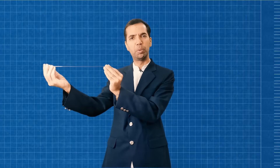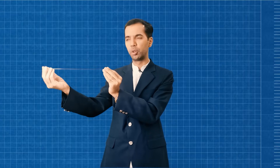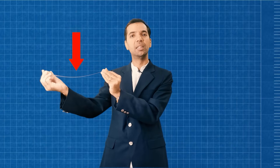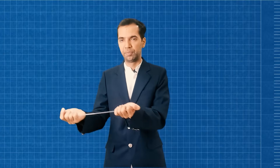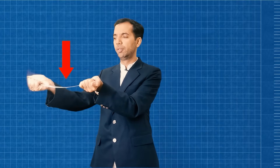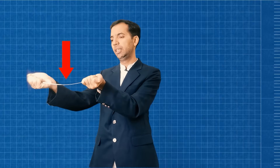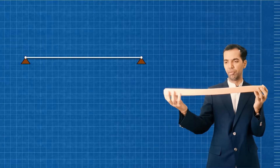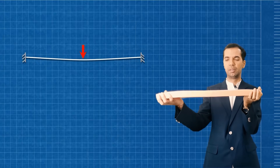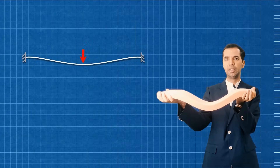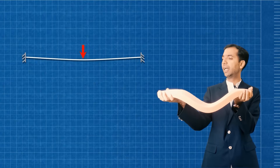Let us try this with a scale. This is a simple scale. Consider this end is simply supported — we are putting a load over it. You can see how it is getting deflected. Now let us make it fixed. Again, put a load over it. You can see how it is deflected differently. This is simply supported — when there is a load, it is going to bend like this. And if it is fixed, it is going to bend like this. See? Exactly the same shape as what we have drawn.